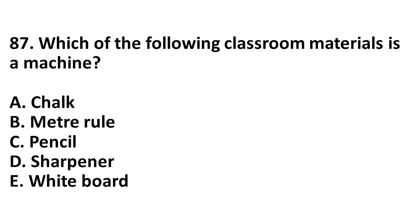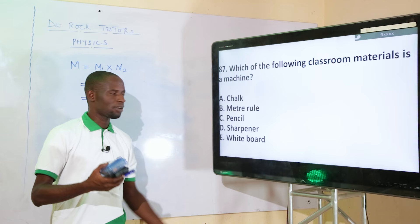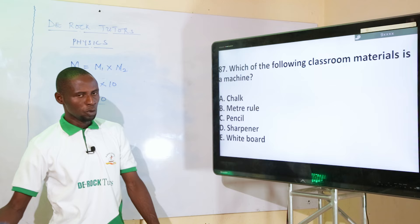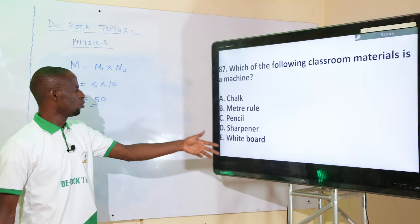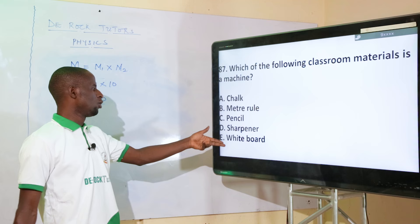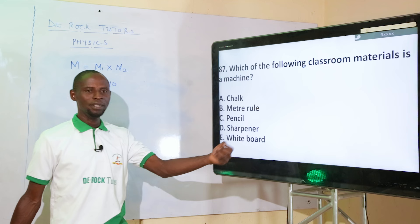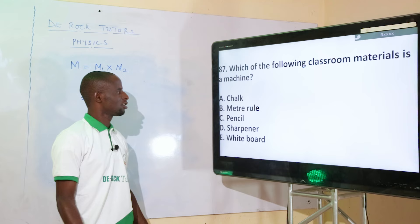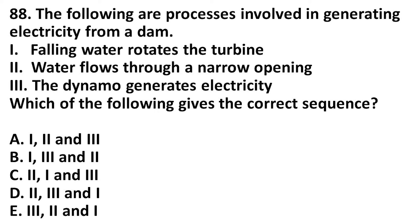Which of the following classroom materials is a machine? A machine is a device that makes work easy, convenient, and faster, or a device where a force applied at one end overcomes another force. Options: shock, metal rule, pencil case, sharpener, whiteboard. A sharpener has a blade — it is a simple machine. The correct option is option D: sharpener.